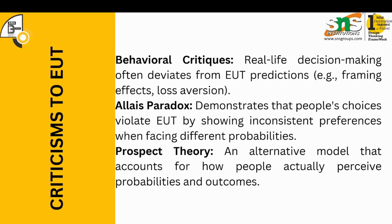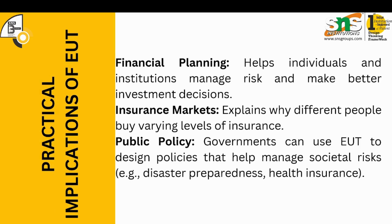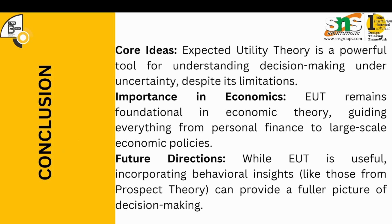Prospect theory is a direct alternative model to expected utility theory, accounting for how people actually perceive probabilities and outcomes. Practical implications of expected utility theory include financial planning — helping individuals and institutions manage risk and make better investment decisions — explaining why different people buy different levels of insurance, and helping governments design policies to address societal risks. In conclusion, expected utility theory is a powerful tool for understanding decision-making under uncertainty, foundational in economic theory, guiding everything from personal finance to large-scale economic policies, and useful for incorporating behavioral insights to provide a fuller picture of decision-making.